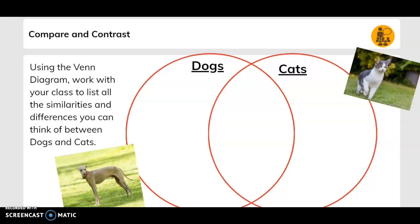Compare and contrast. Using the Venn diagram, work with your class to list all the similarities and differences you can think of between dogs and cats.